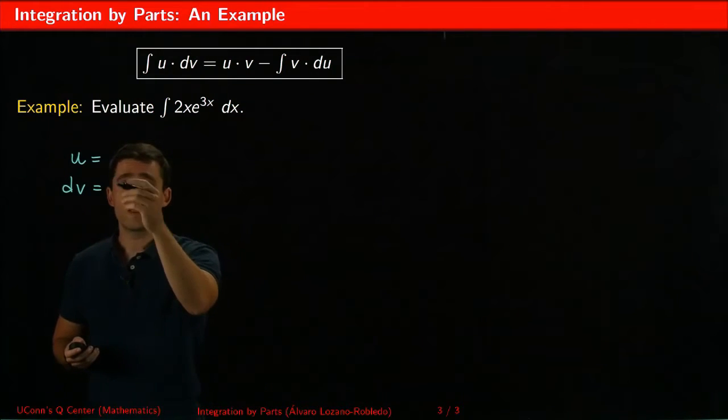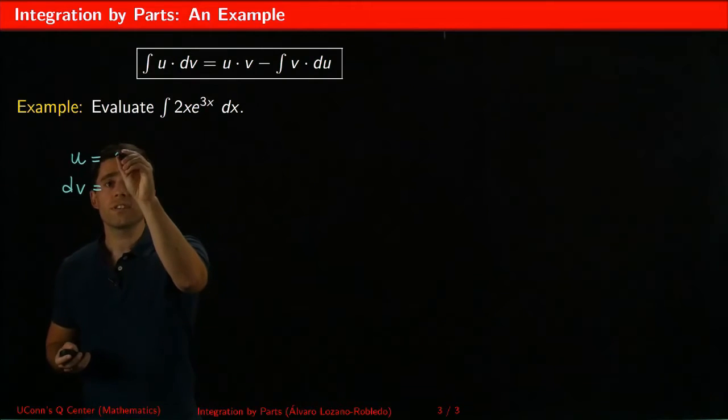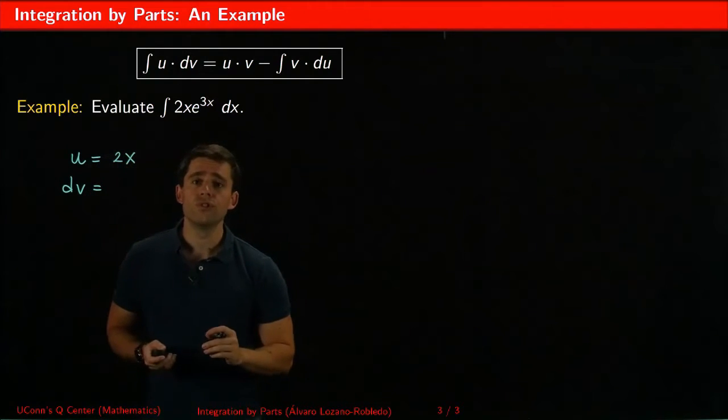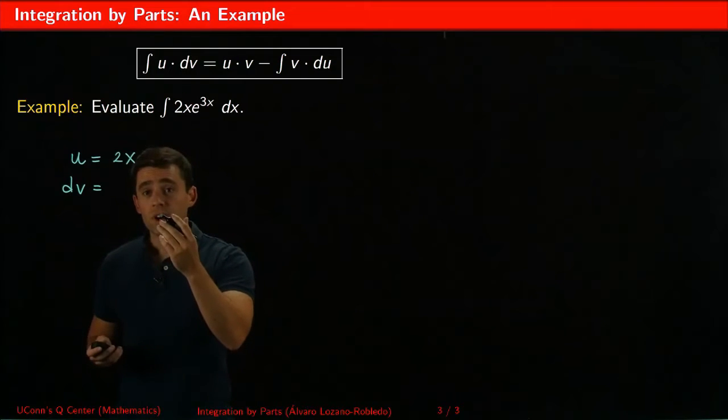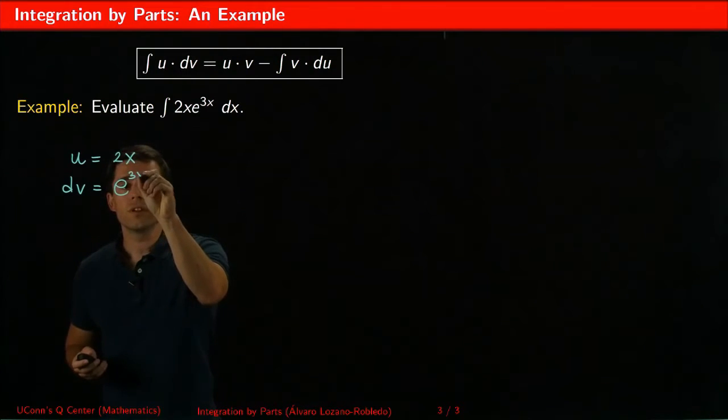I'm going to choose u, some function that is easy to differentiate. So for instance I can pick u equals 2x and I'm going to choose dv to be a function that is easy to integrate such as e to the 3x dx.